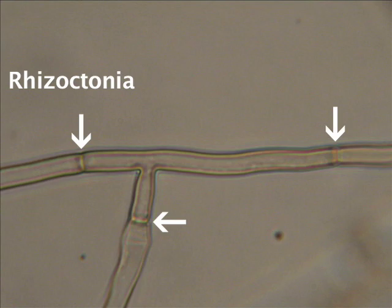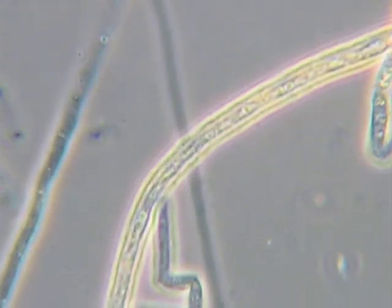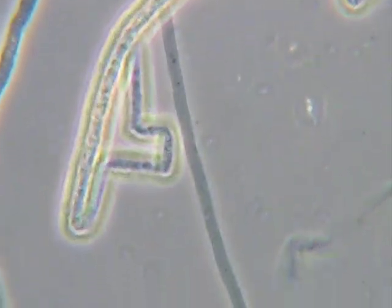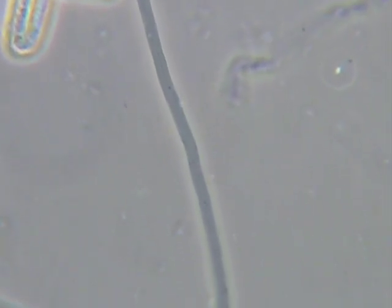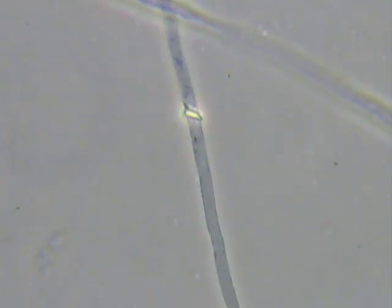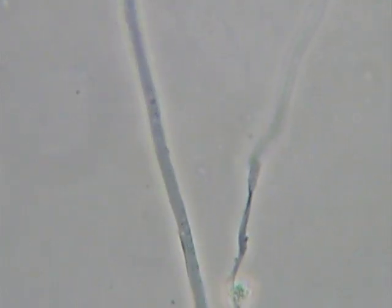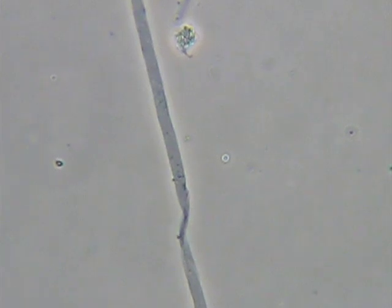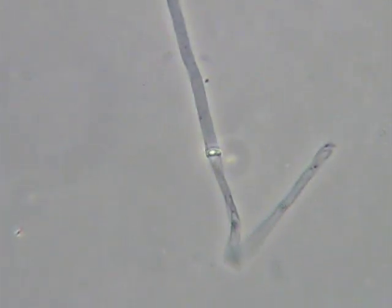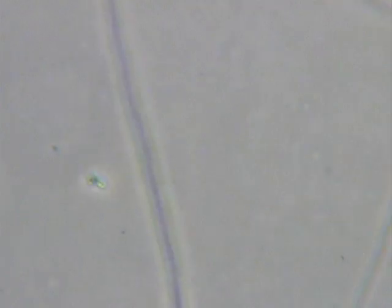The absence of cross walls pretty much puts you into the Pythium group. Looking at the dark hyphae in the background — which has lost its cytoplasm — you can see there are no septa. If there were septa, we would see a bright spot where the septa prevented the cytoplasm from flowing out. With Pythium species, when the hypha is broken, the cytoplasm flows completely out and you can tell there are no septa.